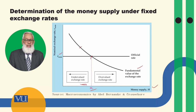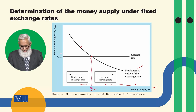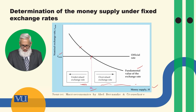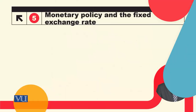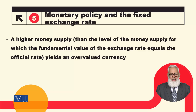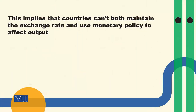If the money supply is above M1, the currency becomes overvalued. A higher money supply than the level at which the fundamental value equals the official rate yields an overvalued currency. A lower money supply yields an undervalued currency.